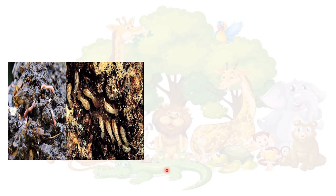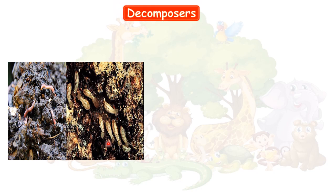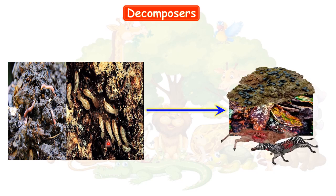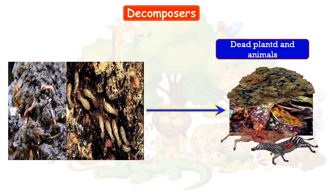Now children, identify this picture. These are decomposers. Decomposers are organisms that eat dead and decaying plants. Examples of decomposers are bacteria, fungi, and worms. You must be familiar with earthworm — earthworm is a decomposer because earthworms eat dead and decaying plants.